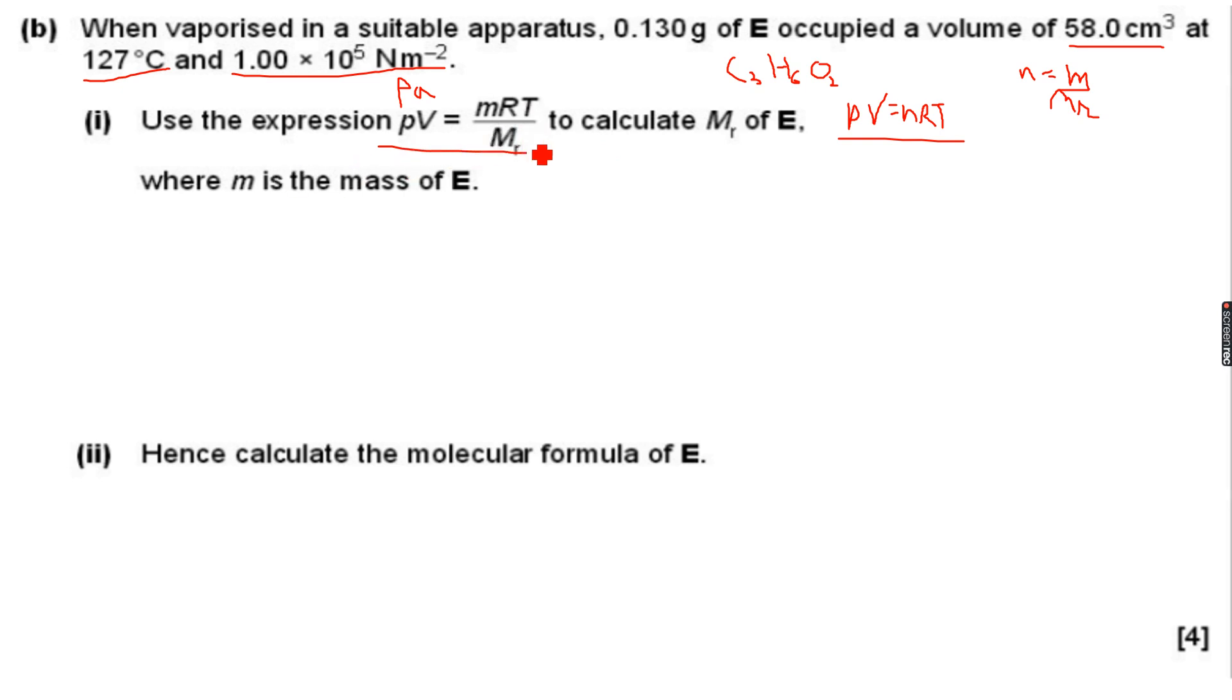M here is the mass of E. We are given P is 1 times 10 to the power of 5. Actually, before taking the values, let's make MR the subject of this equation because that's what we need to calculate.